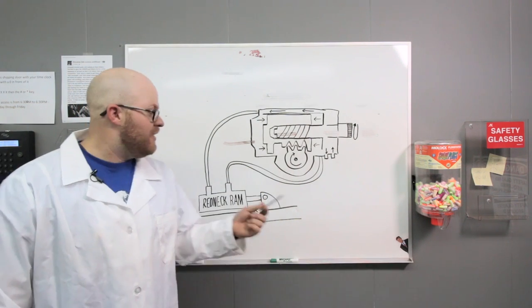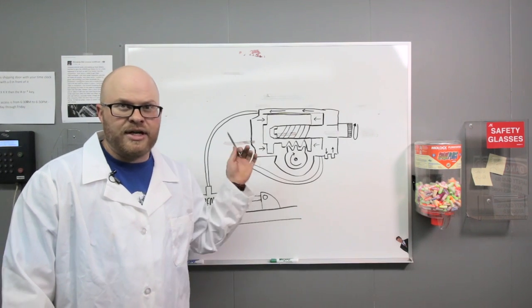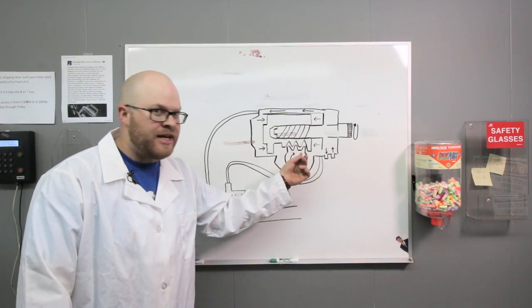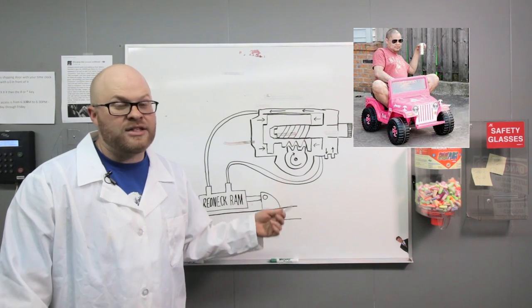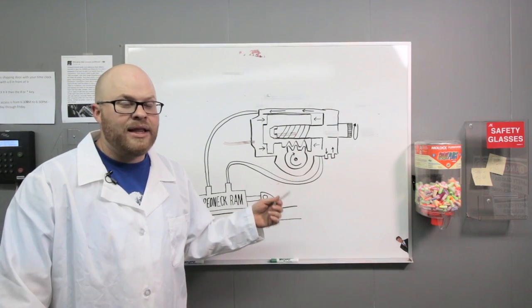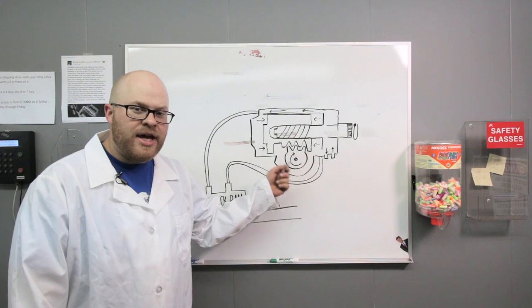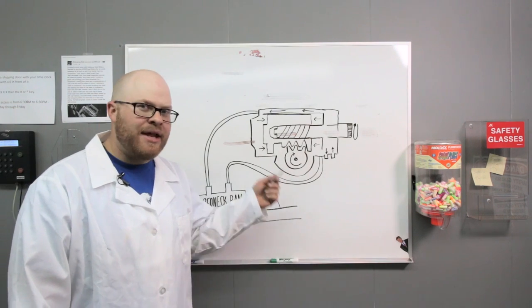Even more importantly, this setup takes stresses off your whole factory steering system, especially this sector shaft, which on a JK is known to be puny and worthless and breaks quite often if you're wheeling big tires. I would say that if you have a JK on 37-inch tires, this is a mandatory upgrade.